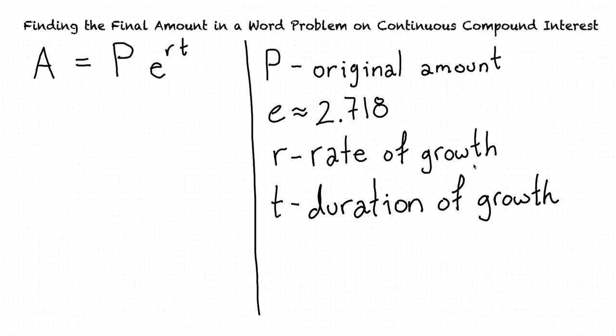It's important that the rate and the duration have the same unit of time. For example, if we measure T, the duration, in years, then we want R, our rate of growth, to be growth per year.